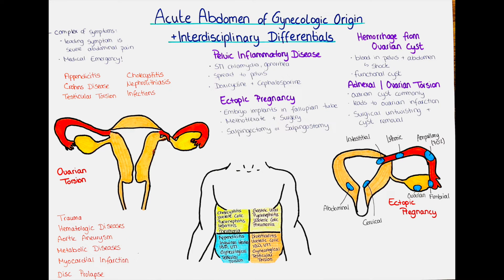Torsion usually occurs on only one side, so the patient often experiences unilateral abdominal pain along with nausea and vomiting. Other symptoms include fever and metrorrhagia. The only curative treatment is emergency surgery where the ovary is untwisted, and if a cyst is found on the ovary it is usually surgically removed.